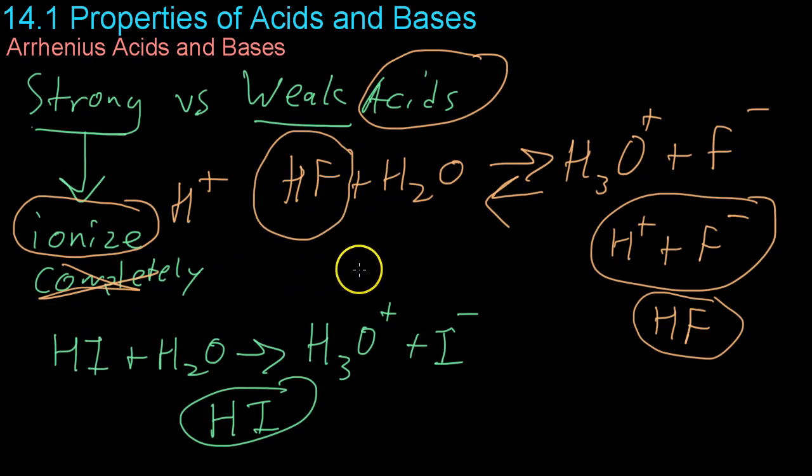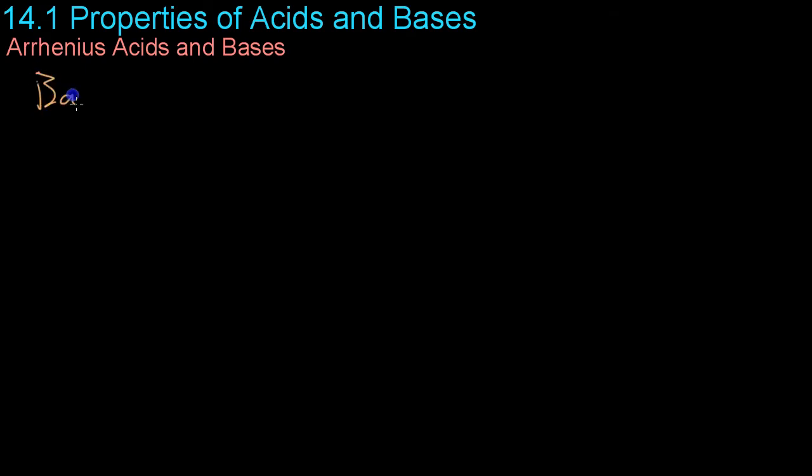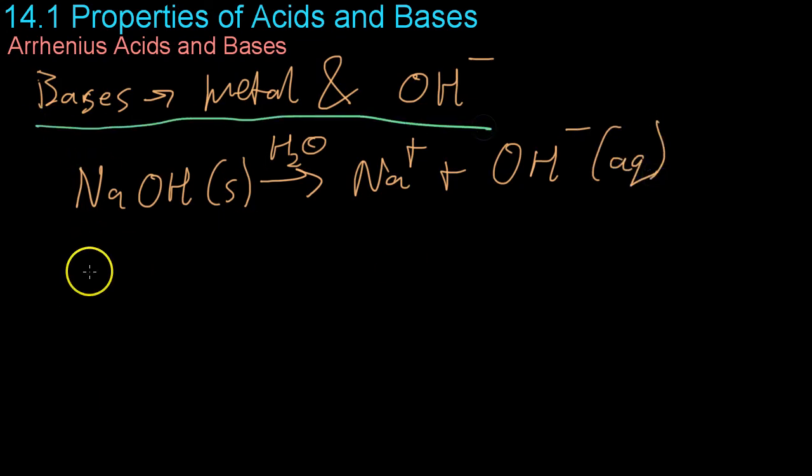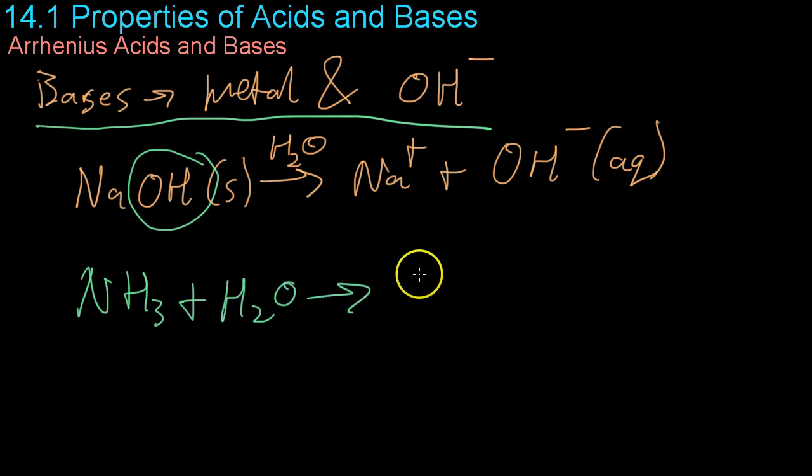Now most bases are comprised of some sort of metal and a hydroxide group. For instance if you take sodium hydroxide as a solid and dissolve it in water you will get free sodium ions and because this is an Arrhenius base you will also get the increase in hydroxide ions. This isn't always the case though. Ammonia for example which is common household base and has a formula NH3 does not have an attached hydroxide group. Rather what happens is that it reacts with the water and takes up one of the hydrogen ions so it then becomes ammonium with a positive charge and because it took away one of the hydrogens it leaves a hydroxide group behind where there was previously a full water molecule.